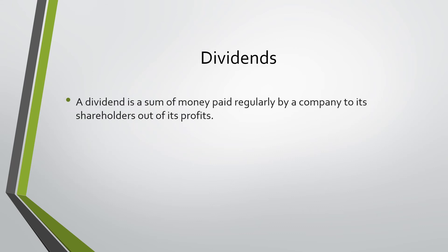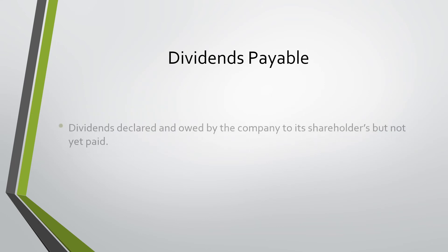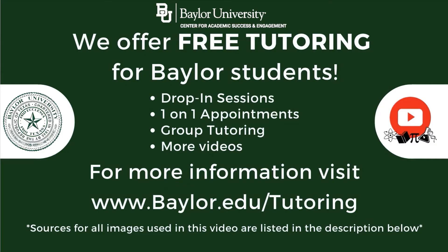Dividends. A dividend is a sum of money paid regularly by a company to its shareholders out of its profits. Dividends payable are dividends declared and owed by the company to its shareholders but not yet paid. It is a liability until it is paid.